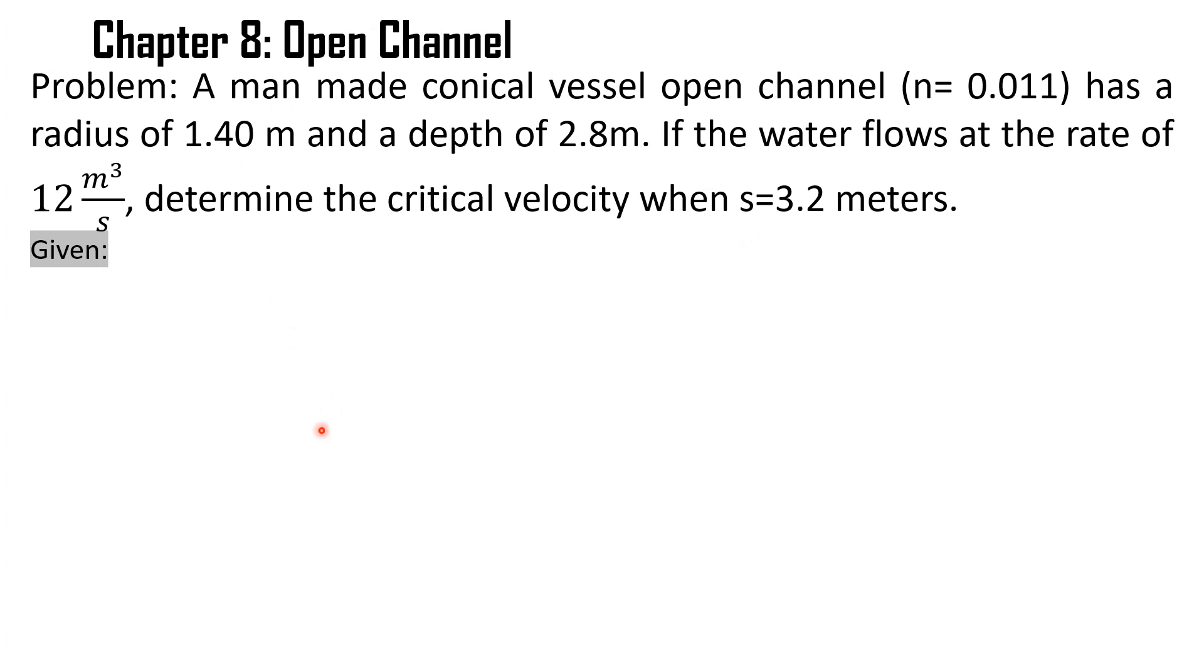Let's identify first the given. We have the radius of the conical vessel which equals 1.4 meters and its height or depth is 2.8 meters. It has the value of s which is 3.2 meters, volumetric flow rate which is 12 cubic meters per second, and the value of n which is 0.011.